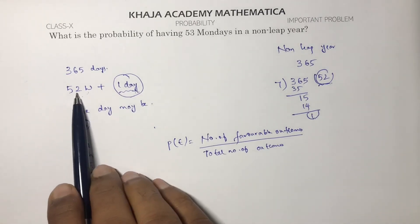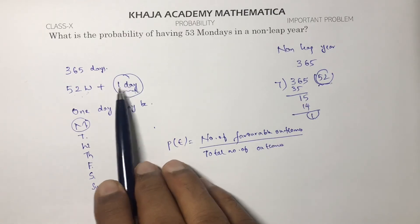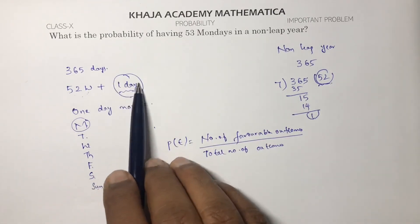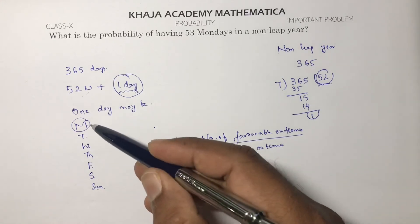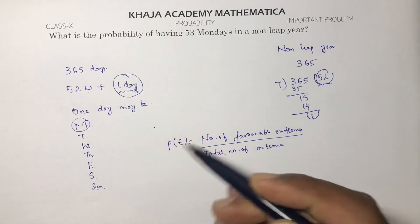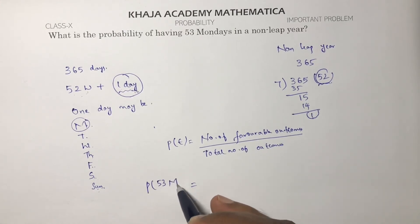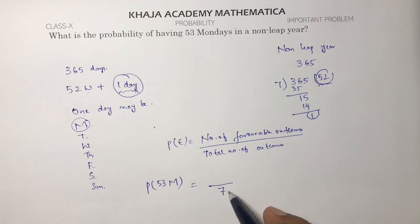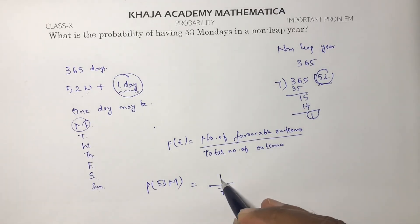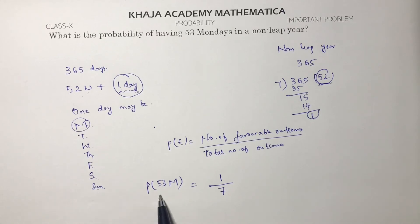With 52 weeks, every day comes 52 times. This one extra day decides whether we get 53 Mondays. For that extra day there are seven possible outcomes: Monday, Tuesday, Wednesday, Thursday, Friday, Saturday, Sunday. Monday appears only once, so the probability of getting 53 Mondays is 1 by 7.